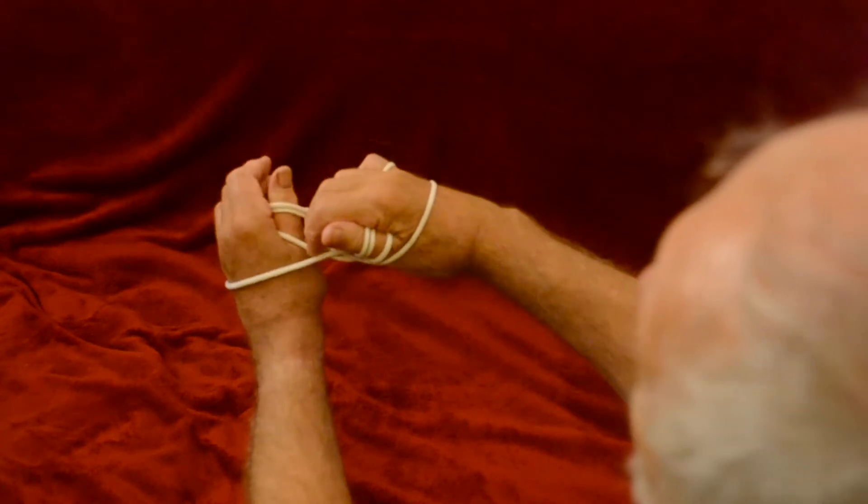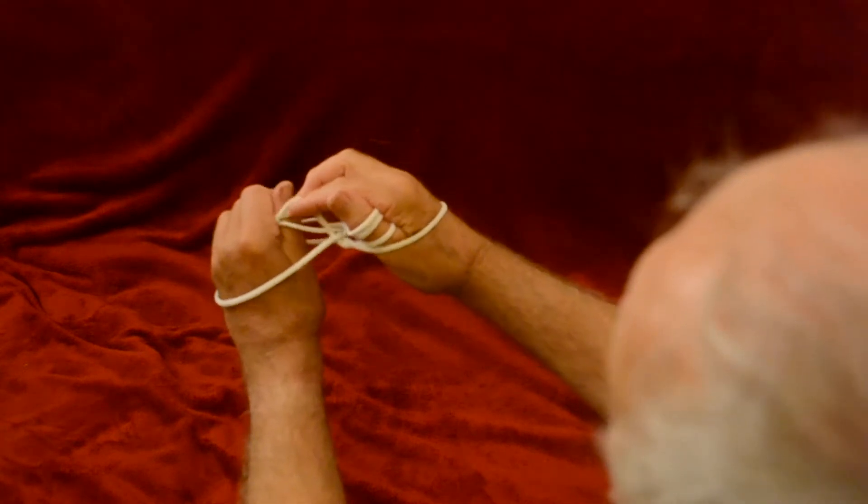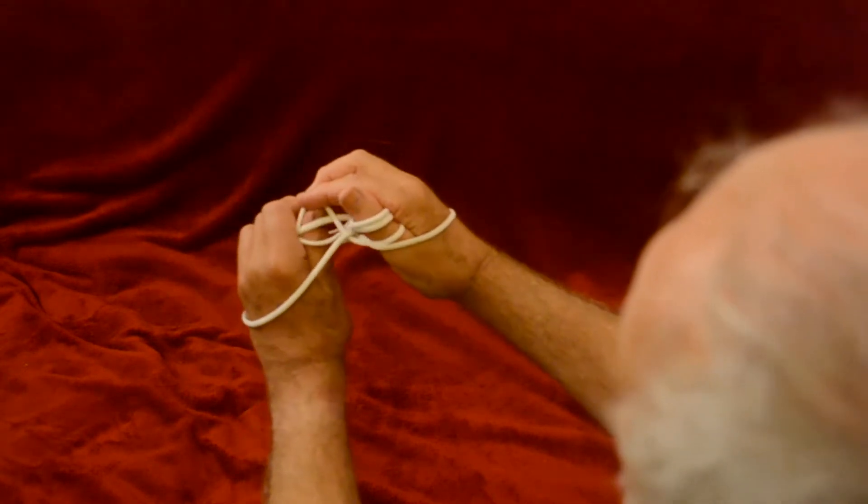Then take the lowest of the three thumb loops and lift it over the thumb and drop it on the far side. This move is called Navajo.